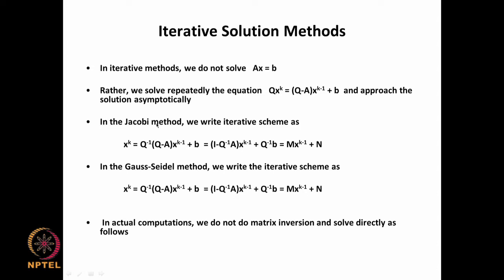In the Jacobi method, we write the iterative scheme as x^k equal to Q inverse times (Q minus A) x^(k-1) plus b, which can also be put in the form M x^(k-1) plus N. In the Gauss-Seidel method, the iterative scheme looks exactly the same except for the definition of Q. For Jacobi, Q is the diagonal of A; for Gauss-Seidel, Q consists of the diagonal elements and the lower triangular elements of A.